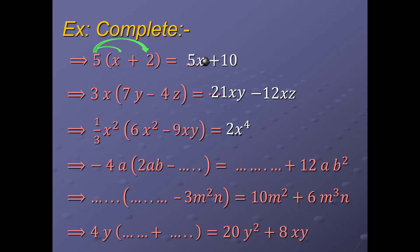Next, multiply (1/3)x² times negative 9xy. Coefficient with coefficient: (1/3) times 9 equals 3. And x² times x equals x³. So the result for the second term is negative 3x³y. The final answer is 2x⁴ minus 3x³y.